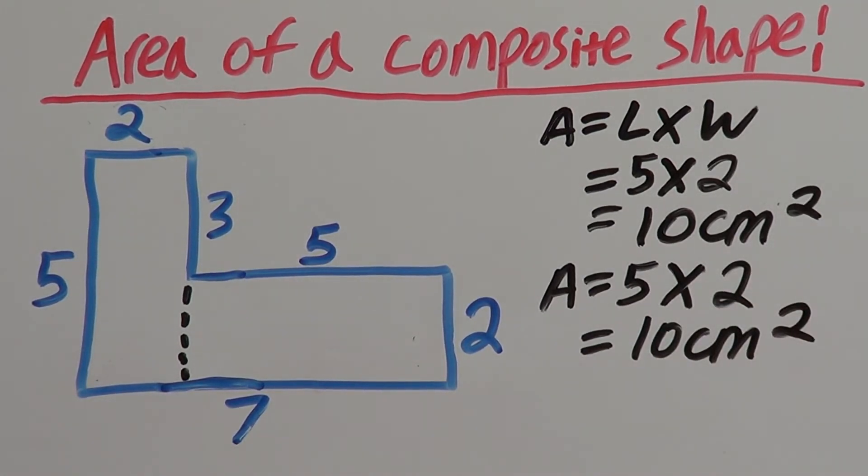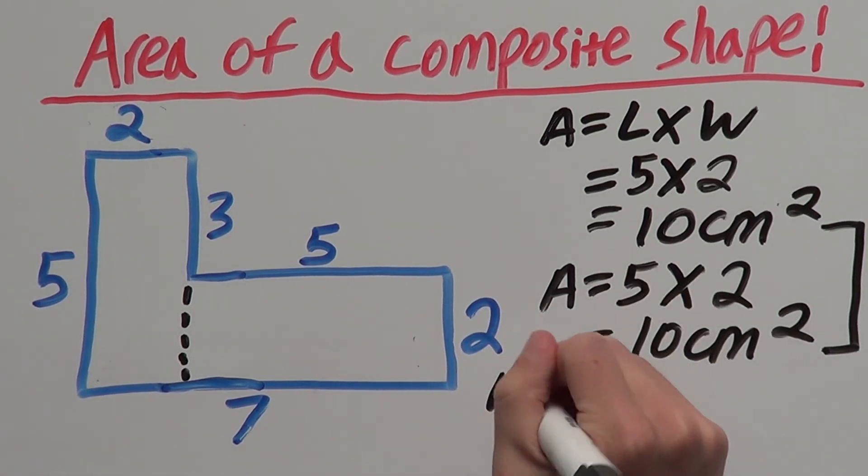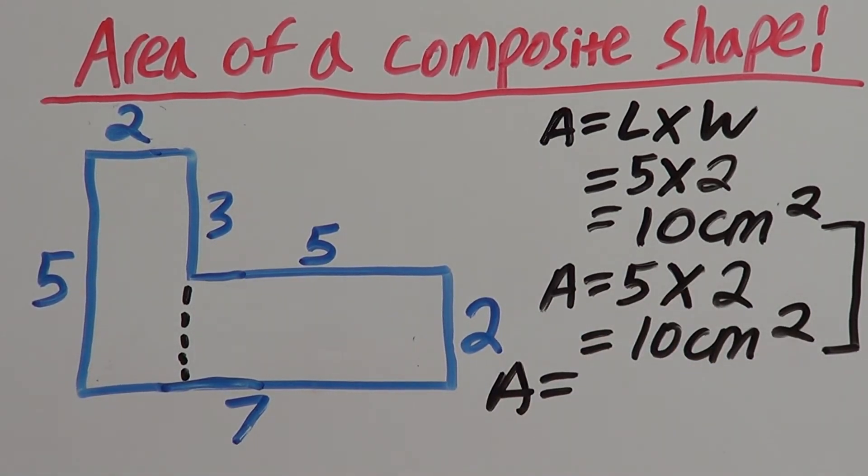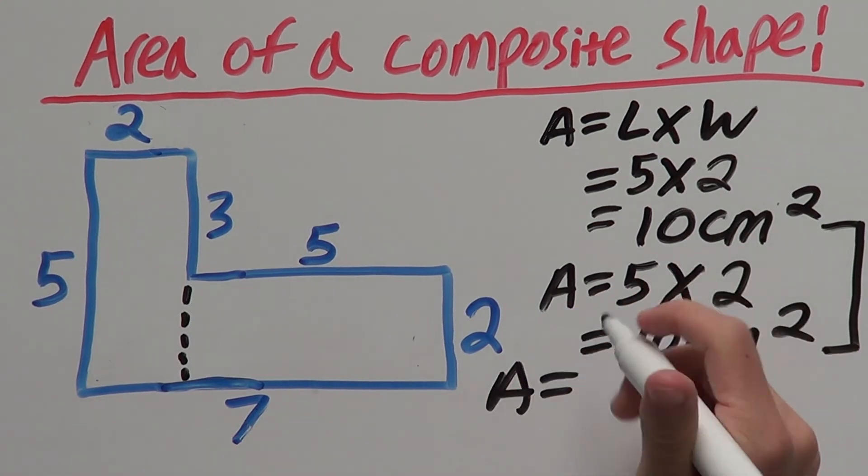And now we have to add our two areas or the areas of all our shapes together. So, our total area of this composite shape is 10 plus 10 which is 20.